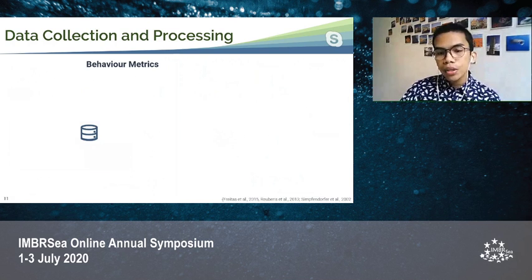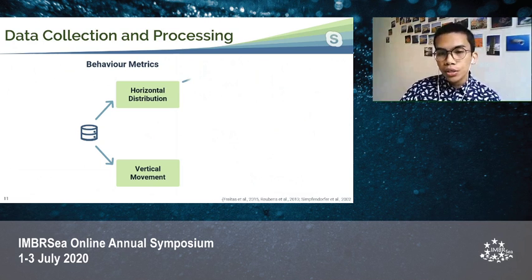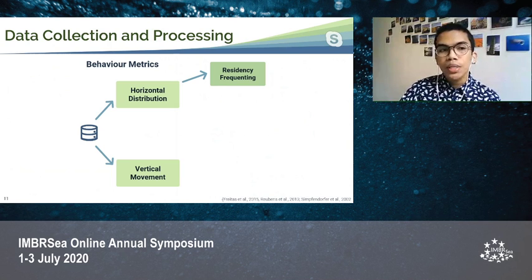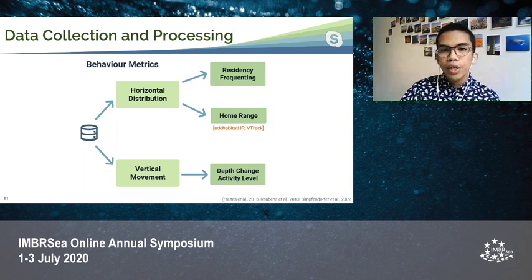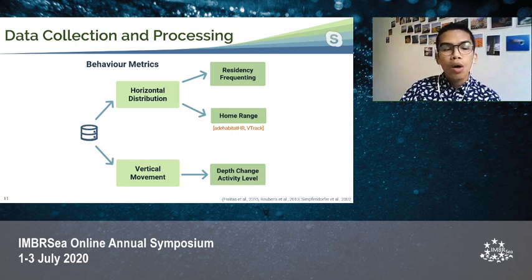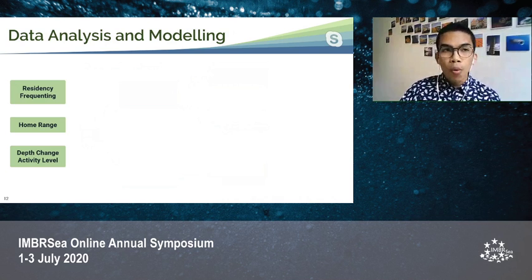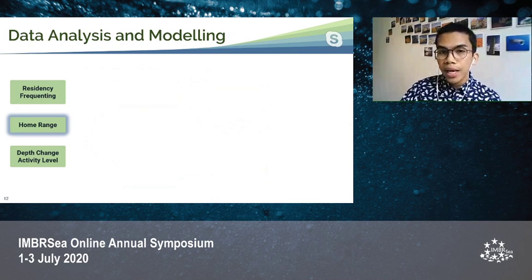The filtered data was then used to calculate behavioral metrics. Under horizontal distribution, residency and frequenting — referring to the presence of the fish in a month at a site — were calculated. Residency was counted as days in the month, while frequenting was hours in a month. Home range was obtained using kernel utilization distribution based on center-of-activity locations of the fish. However, due to the uneven distribution of receivers in the study site, home range area was biased and was thus analyzed visually.